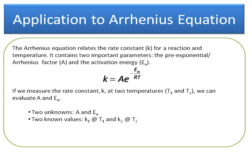We have two unknowns: A, the pre-exponential factor, and Ea, the activation energy. And we have two known values: the rate constant at one temperature and a rate constant at a second temperature.